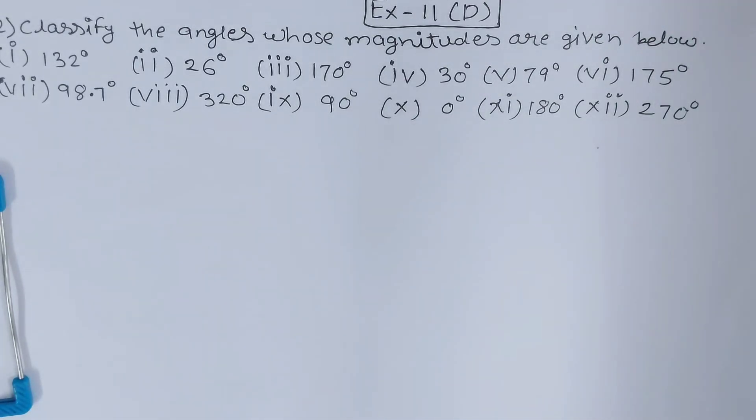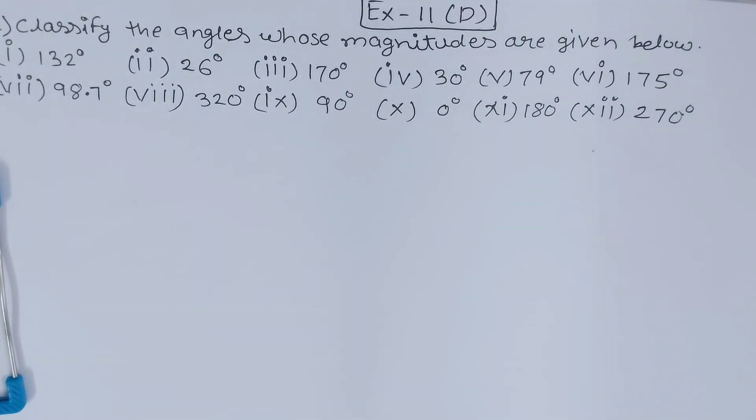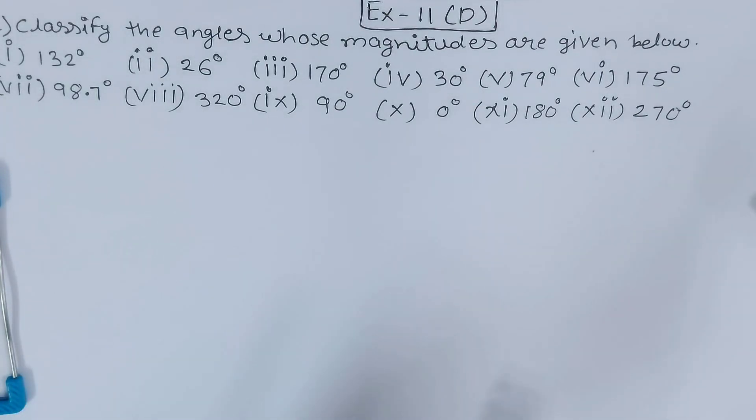Friends, welcome back to my YouTube channel Lock Your Learning. In this video we are going to solve ICSE Mathematics Class 6 Chapter 11 Exercise 11D Question 2. This question asks us to classify the angles - that means we have to tell what is the type of these angles.